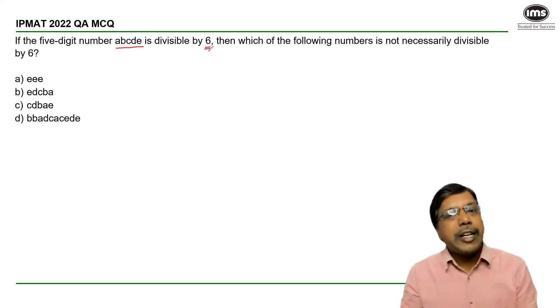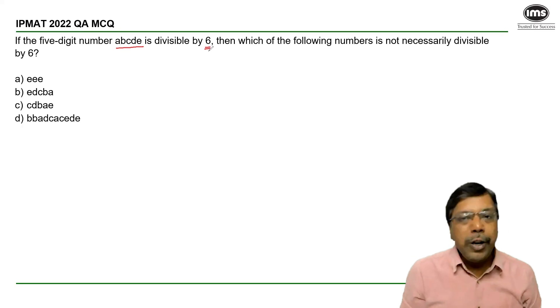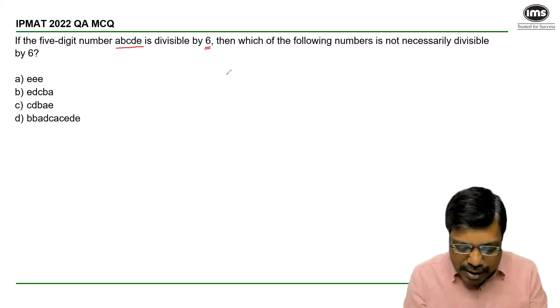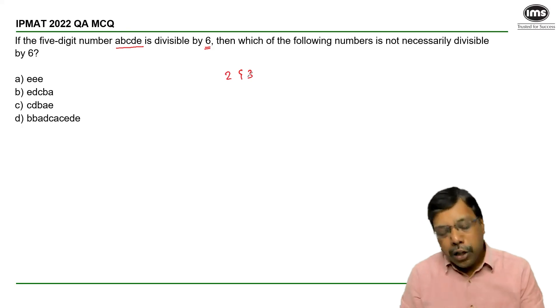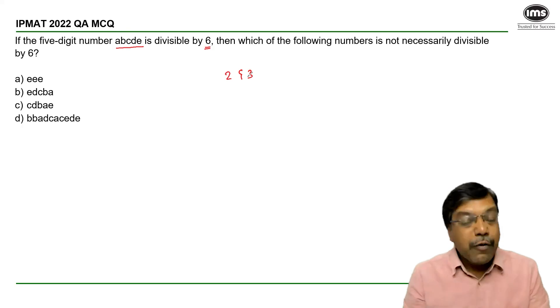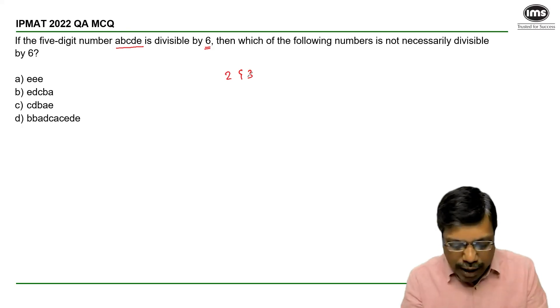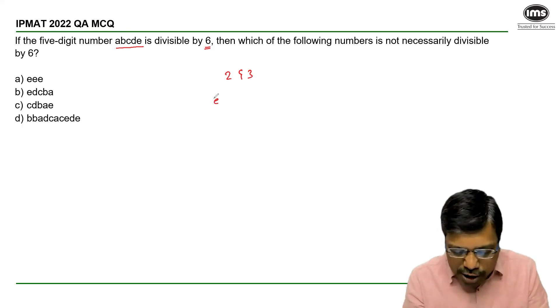How do we determine whether a number is divisible by 6 or not? The number must be divisible by 2 and 3. So if a number is divisible by 6 then in turn it is divisible by both 2 and 3. If a number is divisible by 2, it means the unit's digit is divisible by 2.